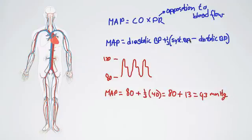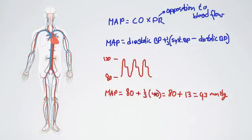So that's mean arterial pressure — two ways to calculate it. Cardiac output times peripheral resistance: cardiac output is the amount of blood pumped by the heart every minute, multiplied by peripheral resistance, which is the opposition to blood flow. In episode 55 we'll go more into peripheral resistance. Or we can take diastolic blood pressure plus one-third of the difference between systolic and diastolic, which gives us 80 plus a third of 40, approximately 93 millimeters of mercury.